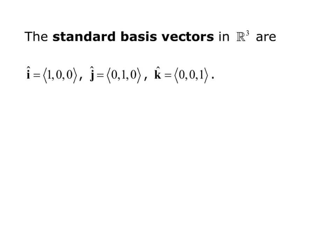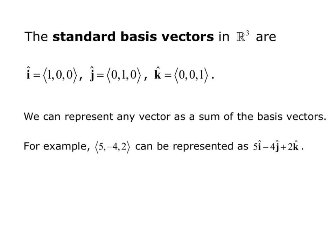The standard basis vectors in R3 are: i, the unit vector in the x direction, which is <1, 0, 0>; j, the unit vector in the y direction, <0, 1, 0>; and k, the unit vector in the z direction, <0, 0, 1>. We can represent any vector as a sum of the basis vectors. For example, the vector <5, -4, 2> can be represented as 5i minus 4j plus 2k.